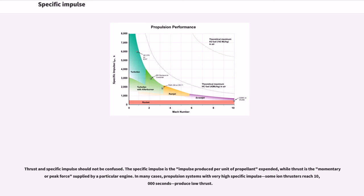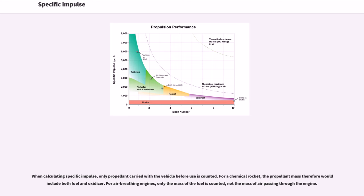Thrust and specific impulse should not be confused. The specific impulse is the impulse produced per unit of propellant expended, while thrust is the momentary or peak force supplied by a particular engine. In many cases, propulsion systems with very high specific impulse — some ion thrusters reach 10,000 seconds — produce low thrust. When calculating specific impulse, only propellant carried with the vehicle before use is counted. For a chemical rocket, the propellant mass therefore includes both fuel and oxidizer.